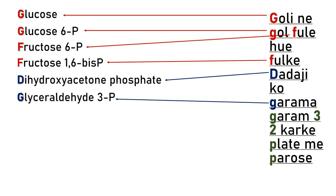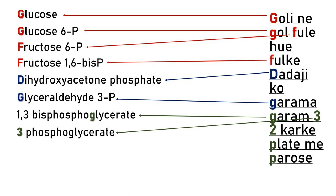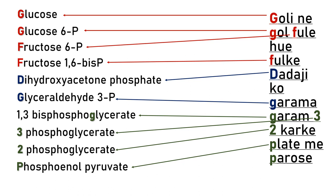From glyceraldehyde-3-phosphate the reaction proceeds further. Another G is for 1,3-bisphosphoglycerate — remember this is the second G and we associate it with 'bis.' Then 3 is for 3-phosphoglycerate, 2 is for 2-phosphoglycerate, P is for phosphoenolpyruvate, and the last P is for pyruvate. In this way, by knowing the mnemonic sentence 'Goli ne gol phule huye phul ke dadaji ko garma garam tindu karke plate me pharo se,' you can recognize all the intermediates from glucose to pyruvate in glycolysis.